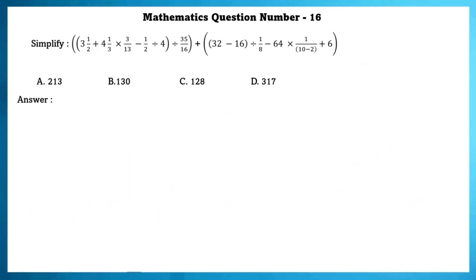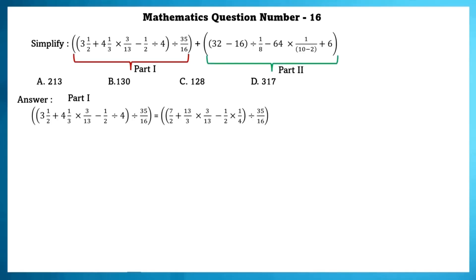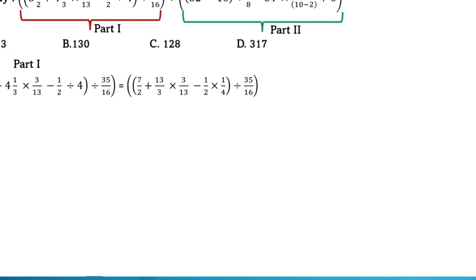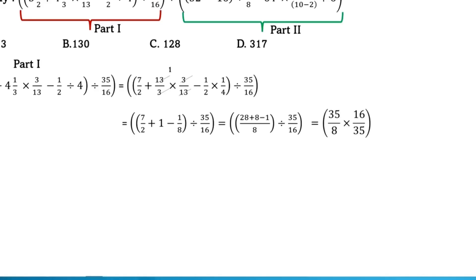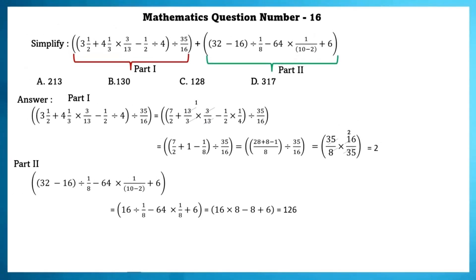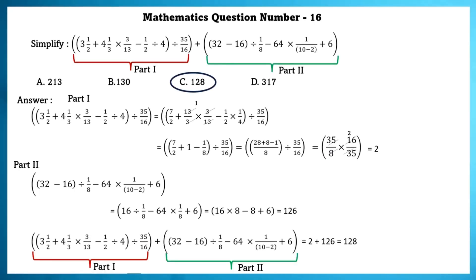Mathematics question number 16. Simplify. Let this be part 1 and this be part 2. First, simplify part 1 by changing all mixed fractions into improper fractions, cancelling and simplifying, then taking LCM to simplify the inner brackets. What is in division, we reciprocate and change to multiplication. The answer for part 1 is 2. Similarly, simplifying part 2 gives 126. The addition of part 1 and part 2 is 128.